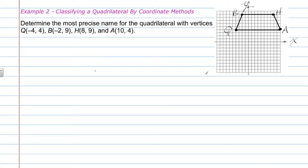Example two: classifying a quadrilateral by coordinate methods. Determine the most precise name for the quadrilateral with vertices negative 4 comma 4, negative 2 comma 9, 8 comma 9, and 10 comma 4. These points have been graphed and connected with line segments. Visually, you should be able to see that BH is parallel to QA, and that BQ and HA are not parallel. Therefore, this has one pair of opposite sides that are parallel, making it a trapezoid. Also, BQ appears to be equal in length to side HA, which would make it an isosceles trapezoid.